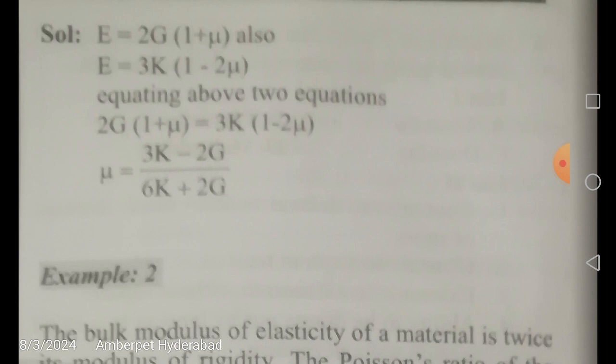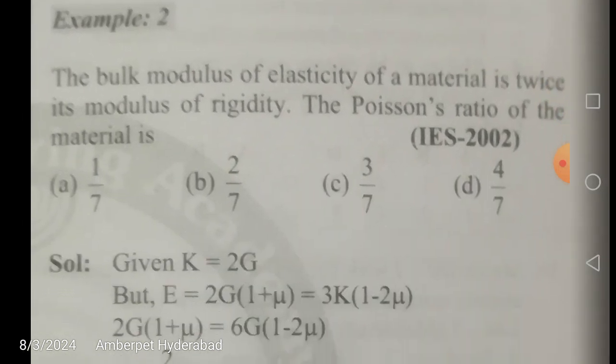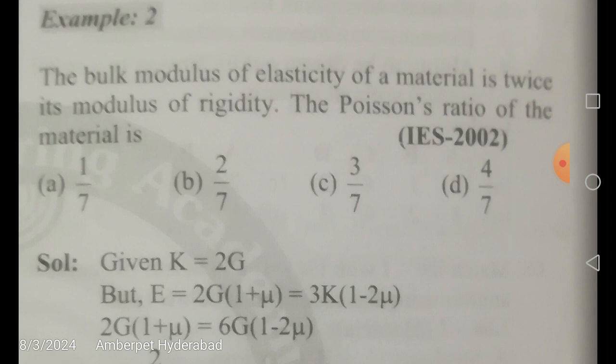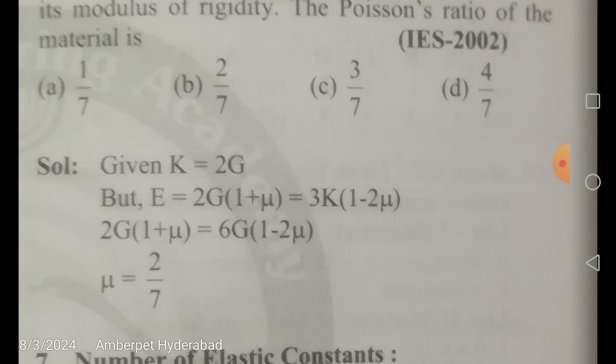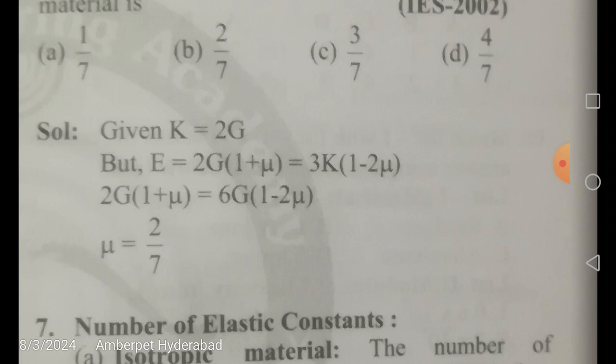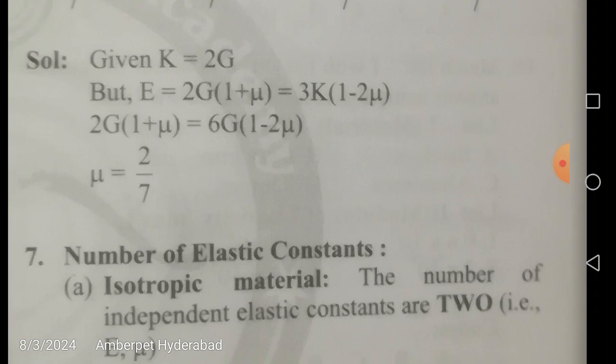Practice problem (IES 2002): The bulk modulus of a material is twice its modulus of rigidity, i.e., K equals 2G. Find Poisson's ratio. Using E equals 2G(1 + μ) and E equals 3K(1 − 2μ), equate: 2G(1 + μ) equals 3K(1 − 2μ). Substituting K equals 2G gives 2G(1 + μ) equals 6G(1 − 2μ). Cancelling G and solving for μ gives μ equals 2/7.